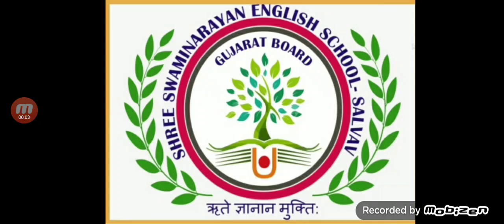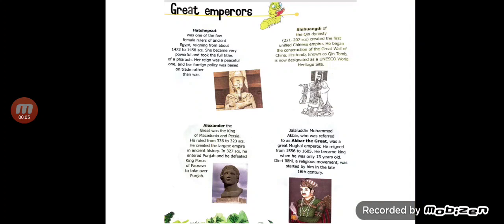Jai Swaminarayan students. Today we will be doing page number 32 and 33, Great Emperors.